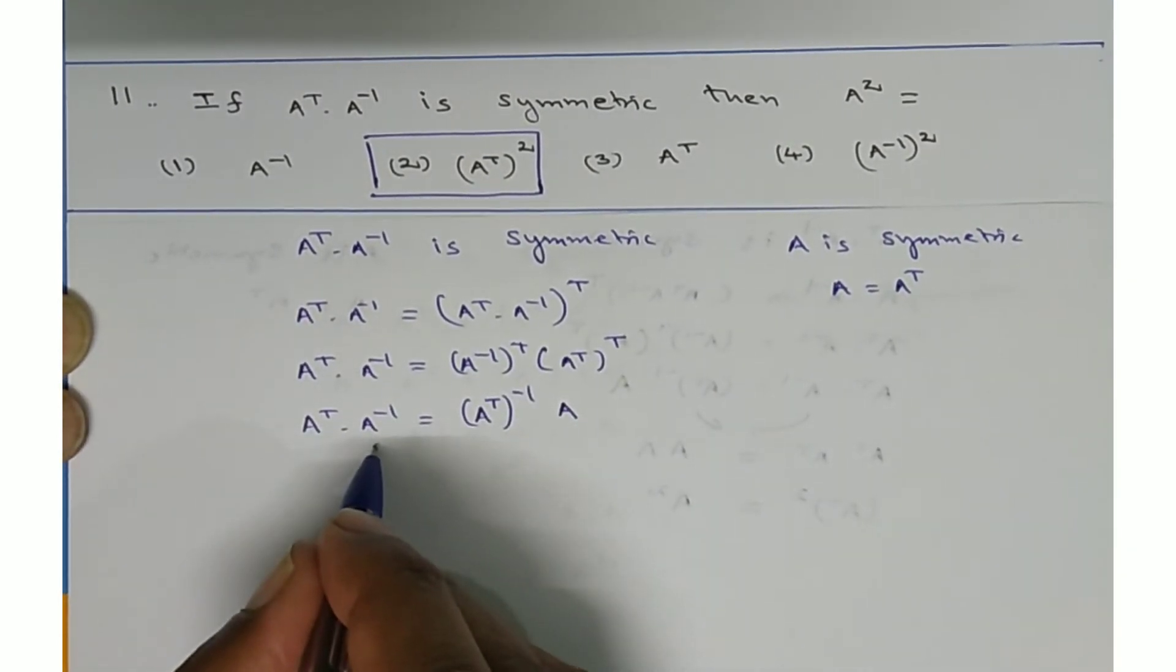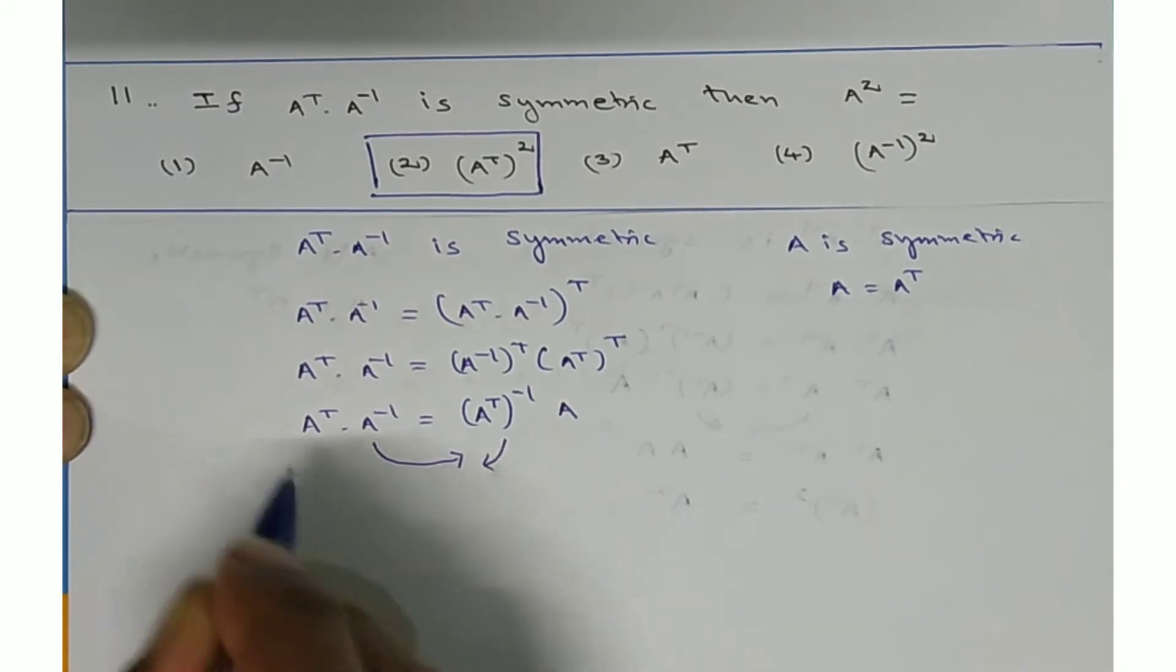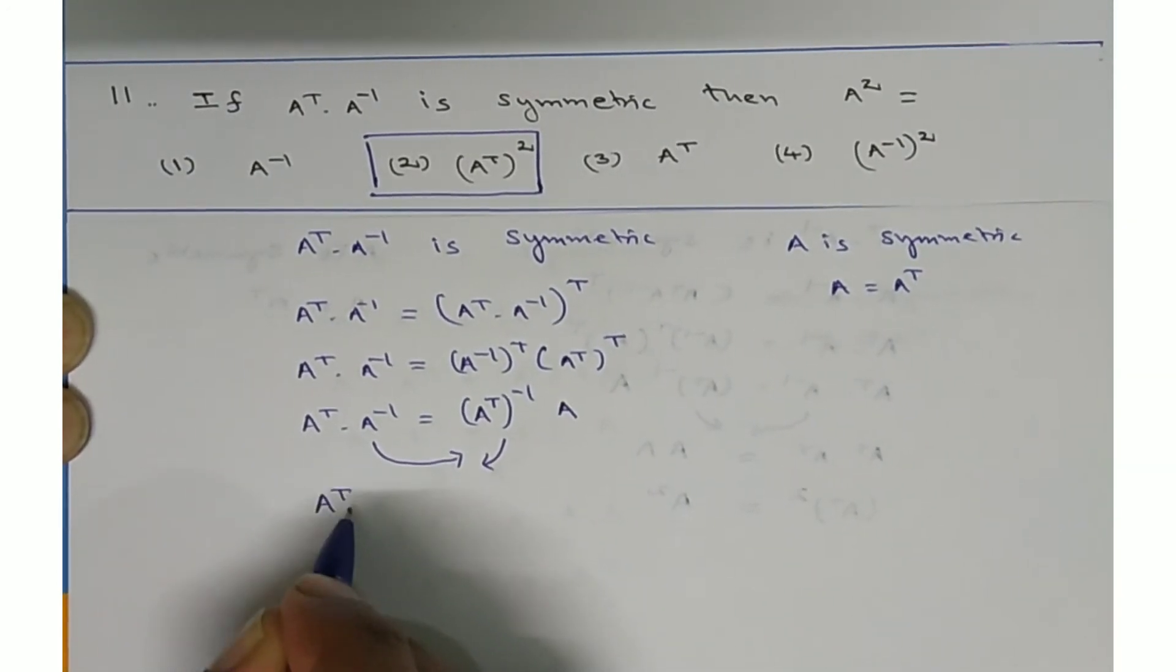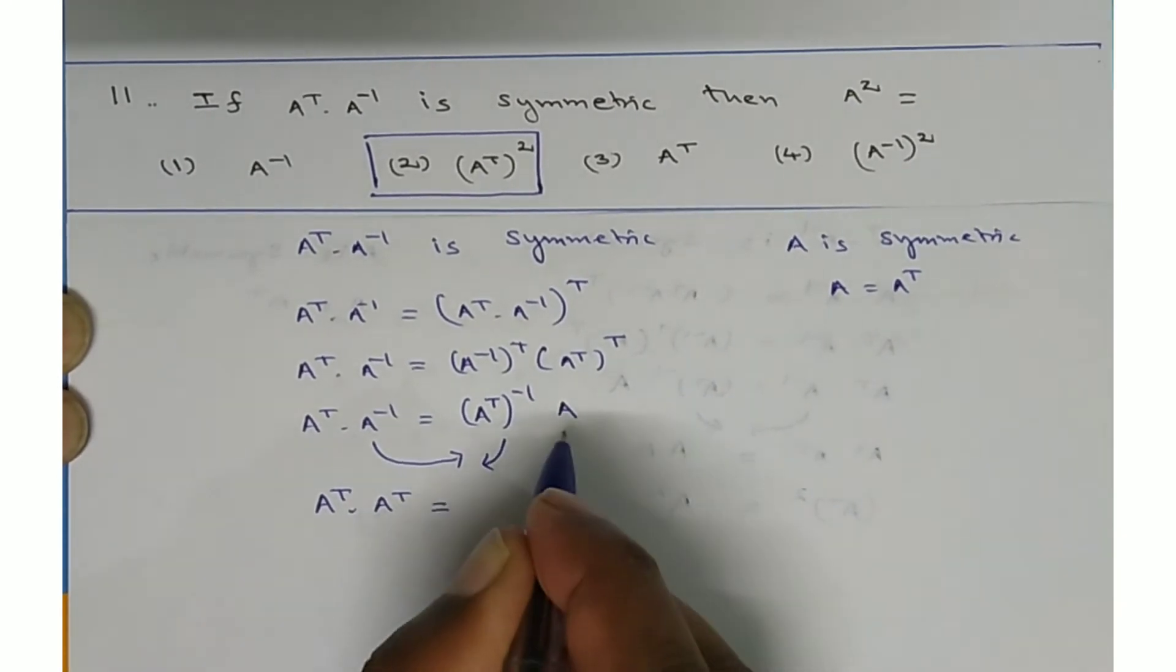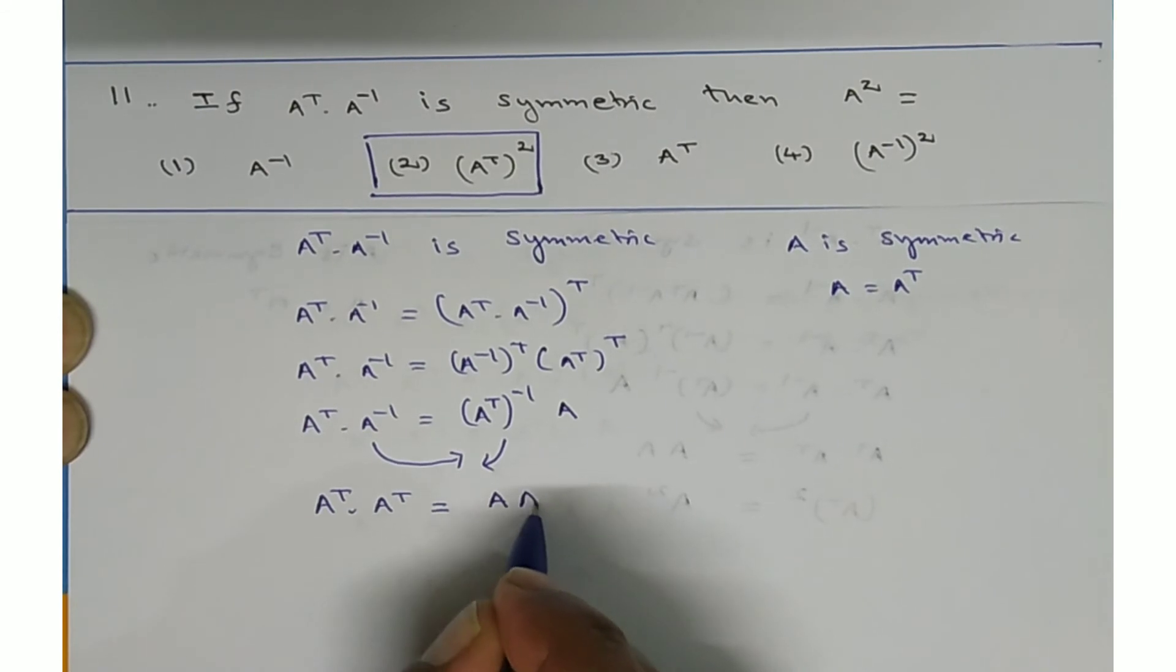Now, take A inverse to right side and A transpose inverse to left side. Here already A transpose is here. When you take A transpose inverse this side, it becomes A transpose. Similarly, A is here. When you take A inverse to other side, it becomes A.